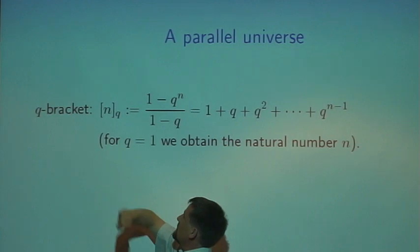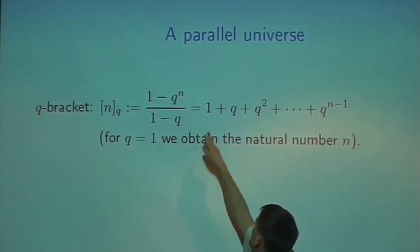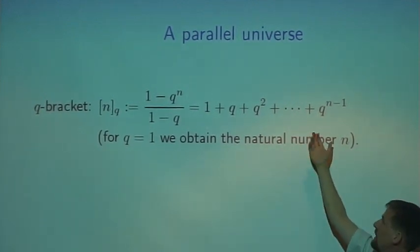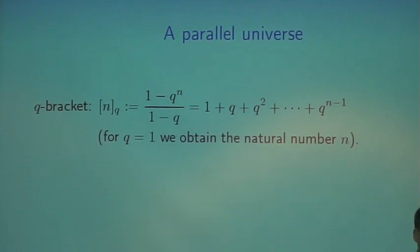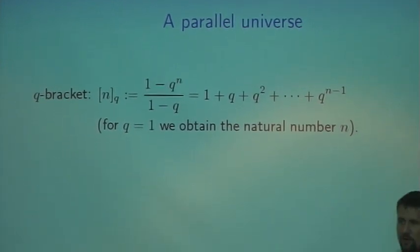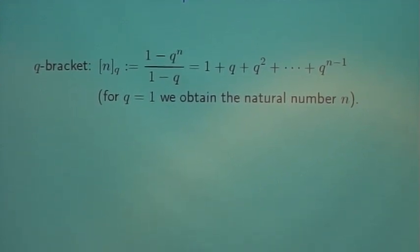This is the q analog for the natural number n, denoted by n sub q. If you expand it you get this. It's clear if you plug in q equals one, you get n. This is the property of these q analogs - if you plug in q equals one, you usually obtain the standard thing which it corresponds to.